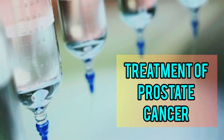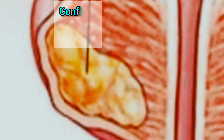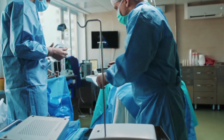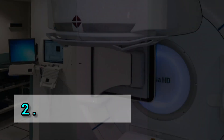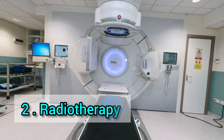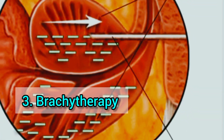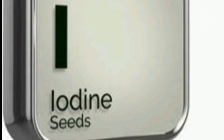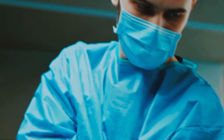Treatment: Prostate cancer that is only present in the prostate is often treated with either surgical removal of the prostate or with radiation therapy. Number two: Brachytherapy consists of inserting small radioactive particles of iodine-125 or palladium-103, and it is used in some prostate cancer cases.